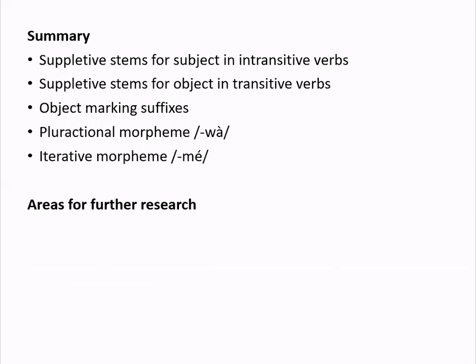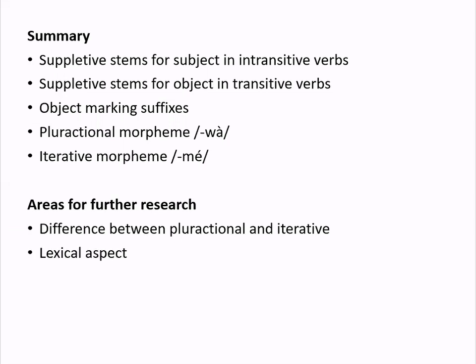A few areas of possible further research: one is to get more into the difference between the pluractional and iterative morphemes — they often have similar functions but don't overlap entirely; for example, I don't have examples of the iterative being used for habitual aspect, but I do for the pluractional. We could also look at lexical aspect and how it interacts with the different number marking devices. What's of particular interest to me is the idea of hierarchy and conflict: the language has multiple devices — what's the hierarchy between them when they conflict? A plural intransitive verb stem with singular inflectional marking is always understood as having a plural subject, so how many other devices can conflict and what's the interpretation when they do? Thanks very much for listening.